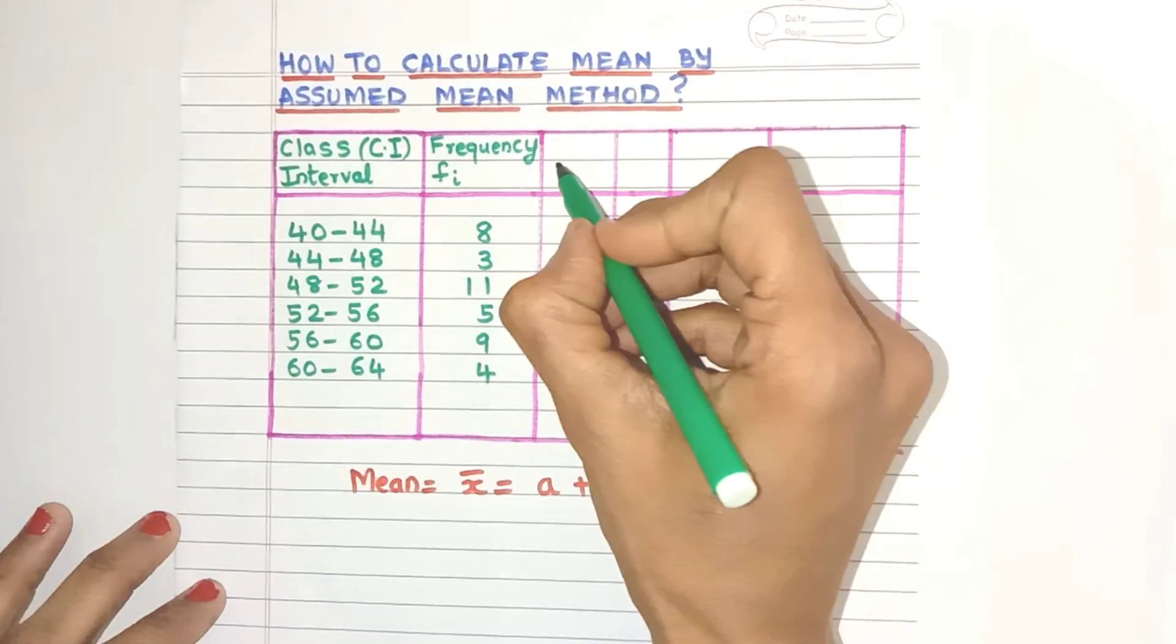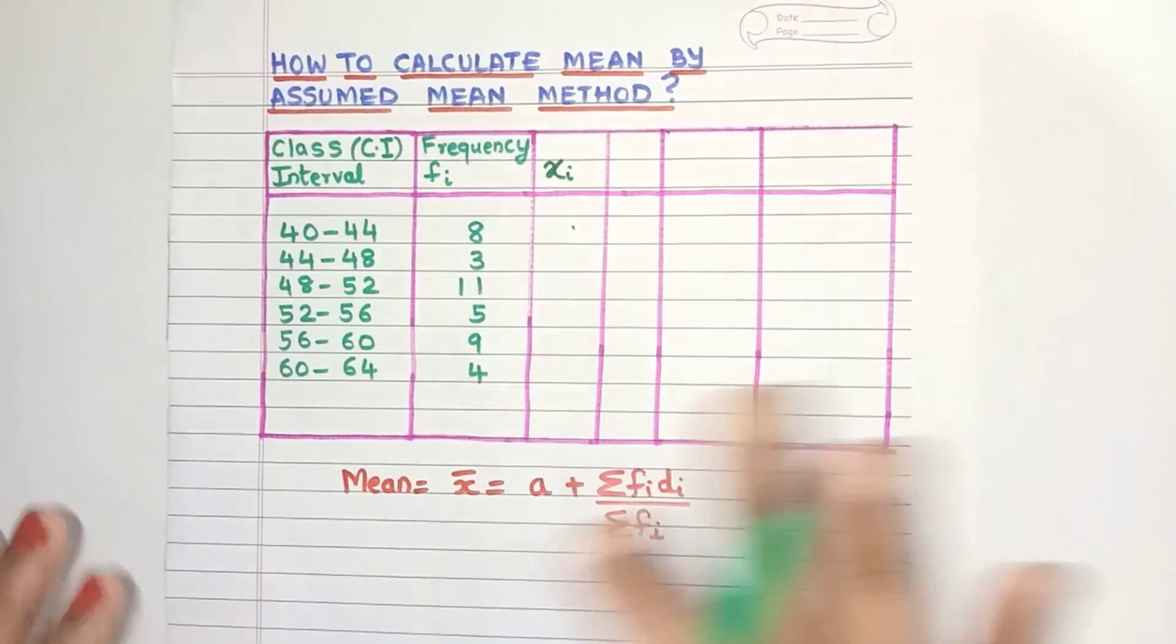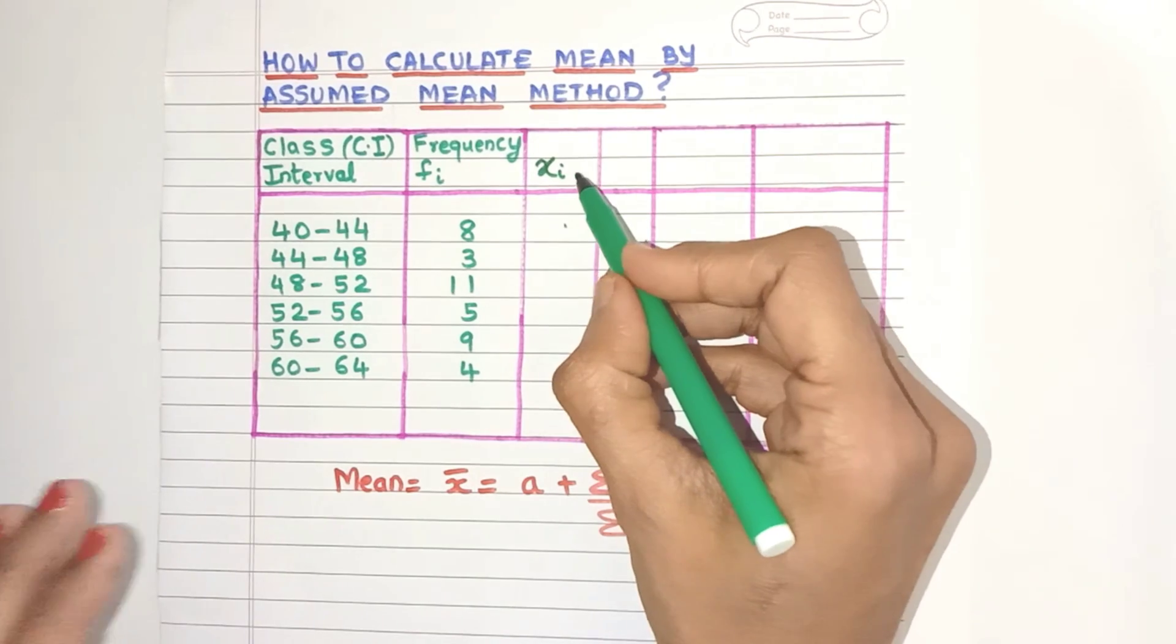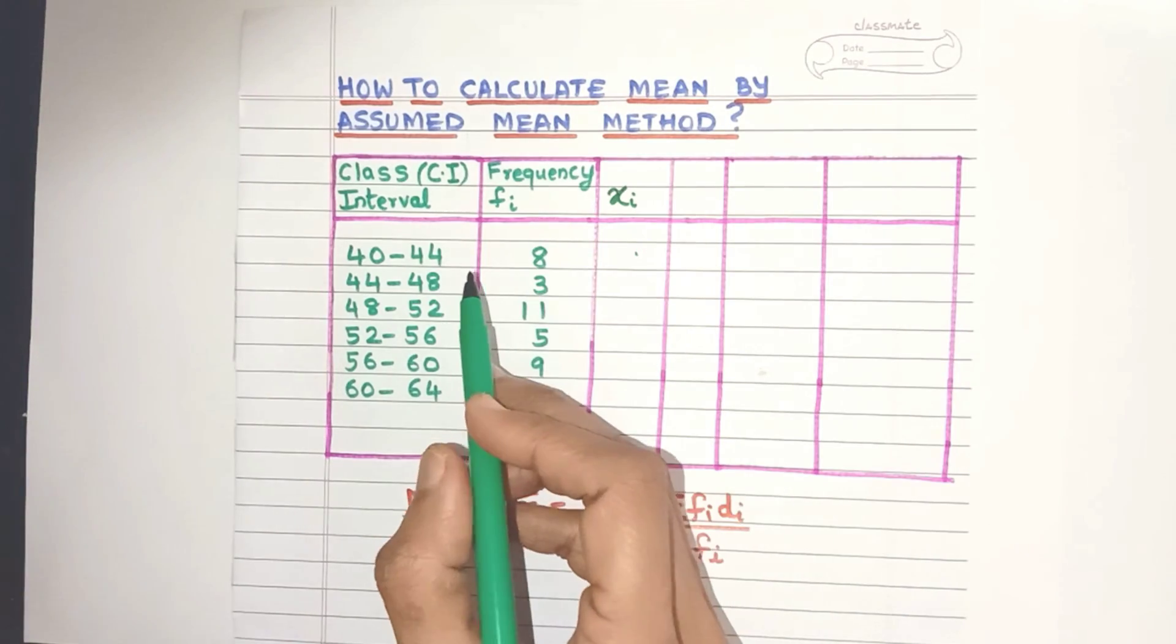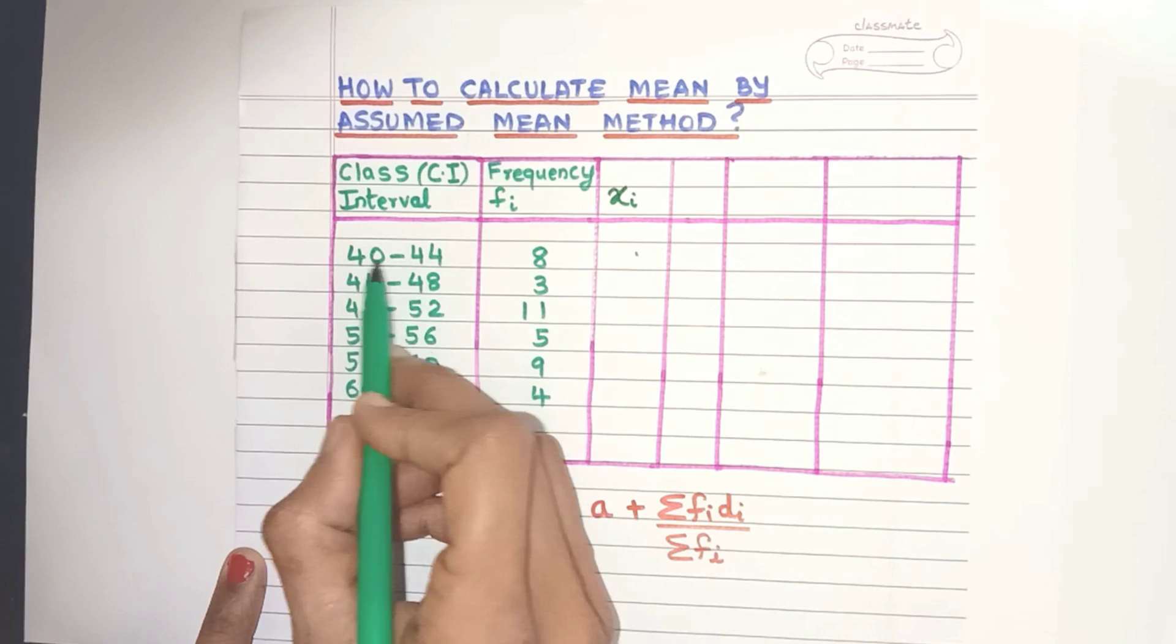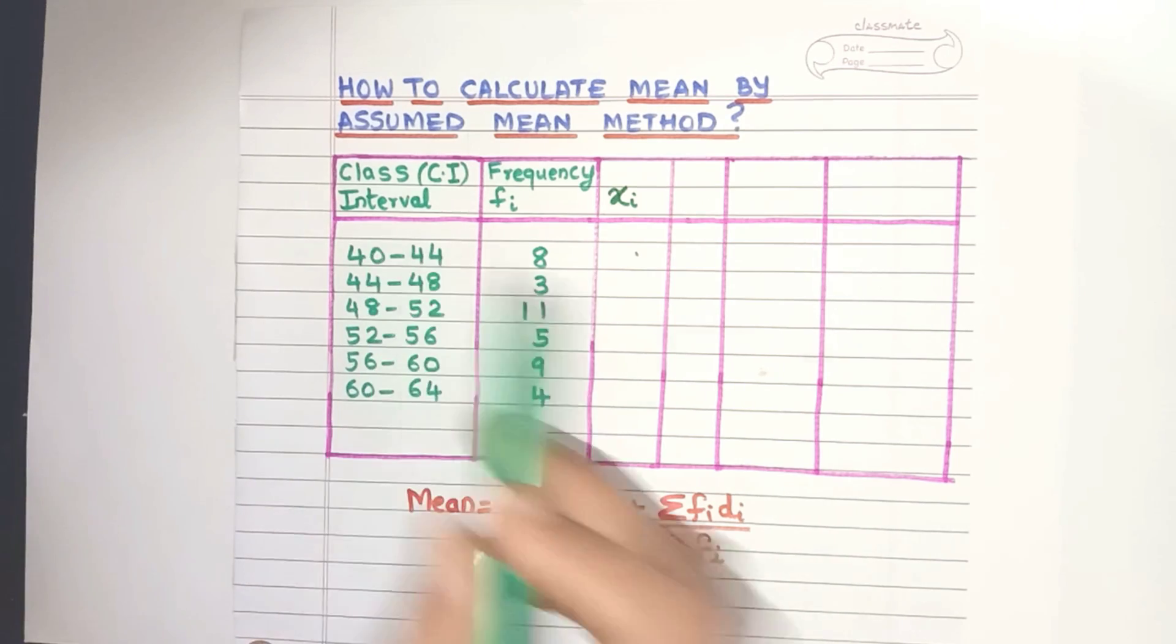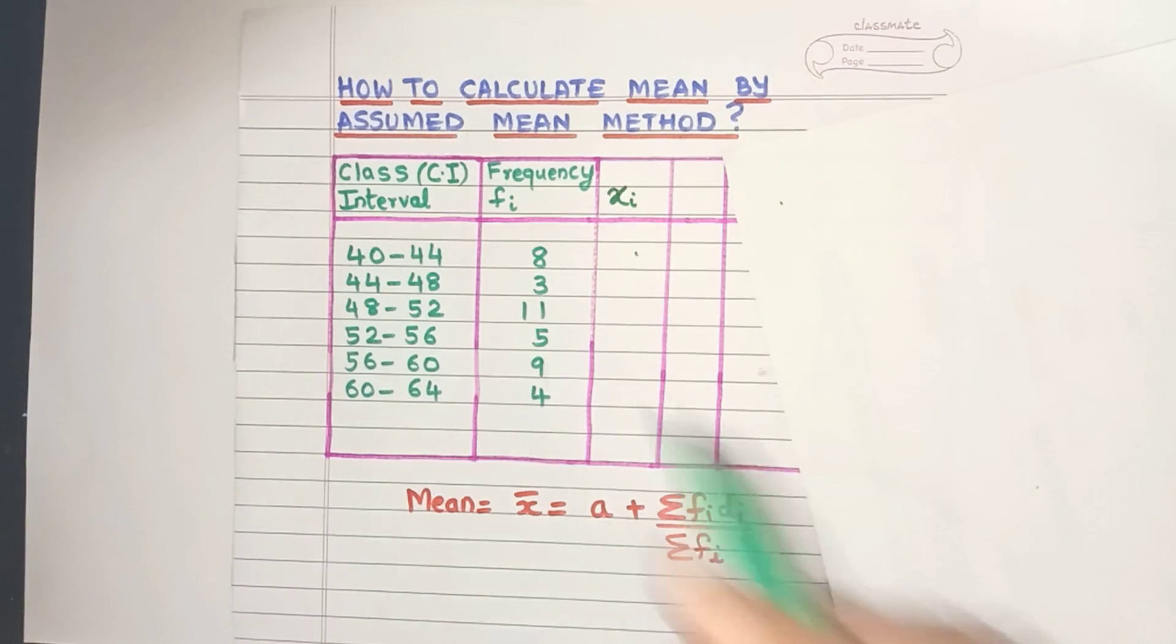So the first column is called the xi column. In fact, for any mean method, this is the first column that we need to create. Now what is xi? Yes, it's called the class mark, that is the middle value of every class interval. You can easily find it by adding the lower limit and upper limit and divide it by 2.